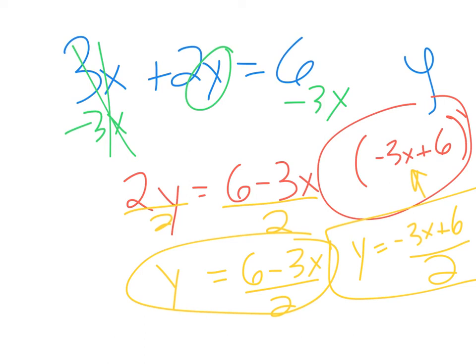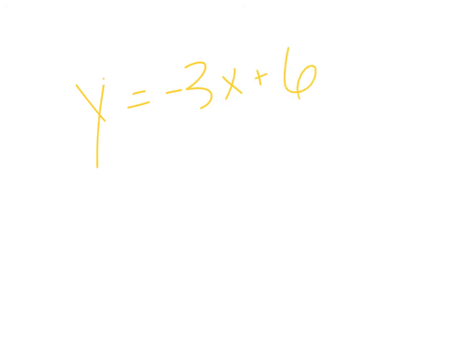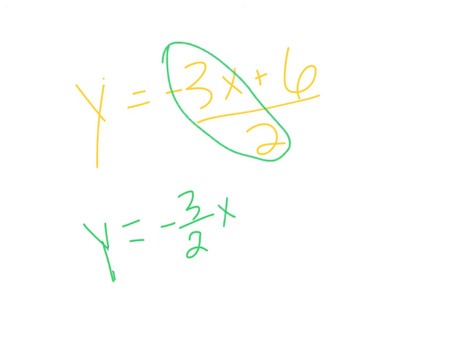Distributing the 2: negative 3x over 2 stays as negative 3/2 times x since 3 can't be divided evenly by 2. And 6 over 2 reduces to 3. So y equals negative 3/2 x plus 3. Let me do another example to show more literal equations where we rearrange for a different variable.